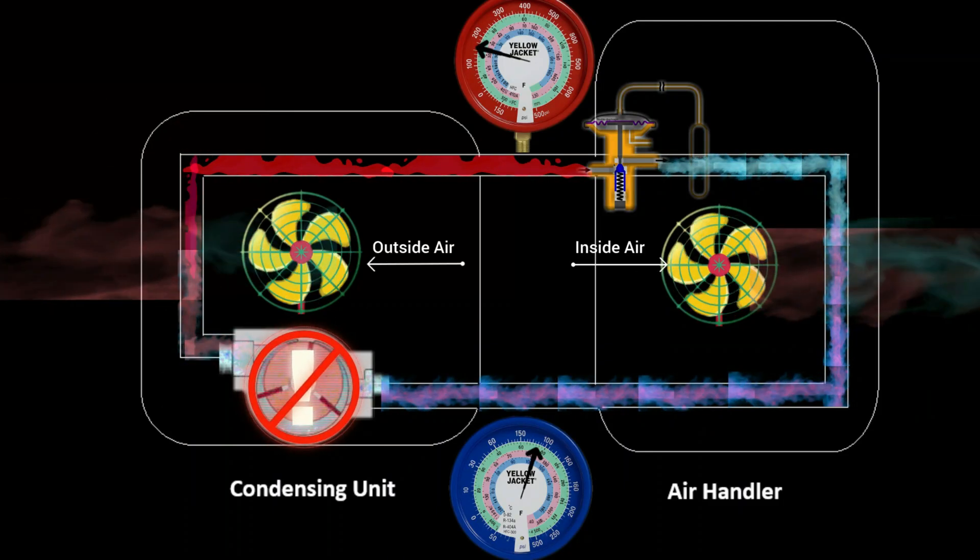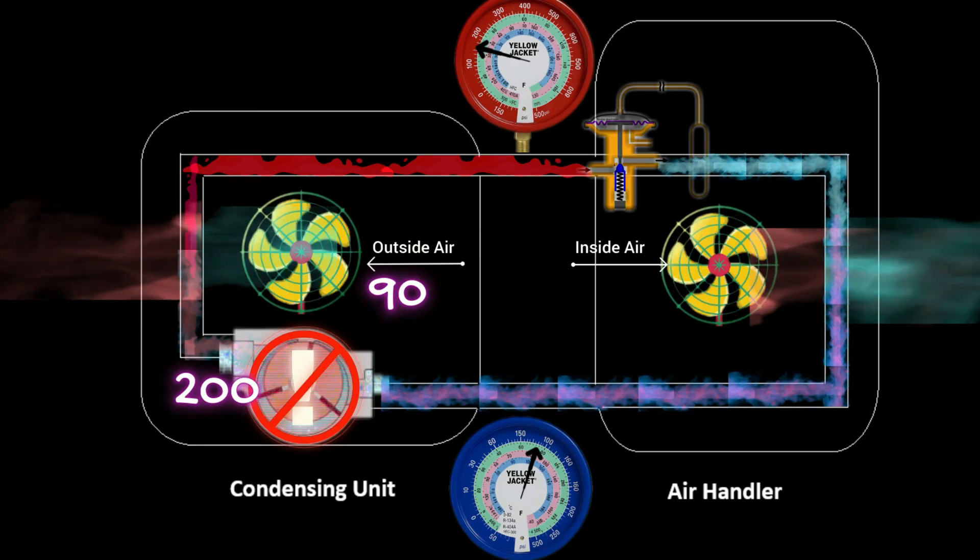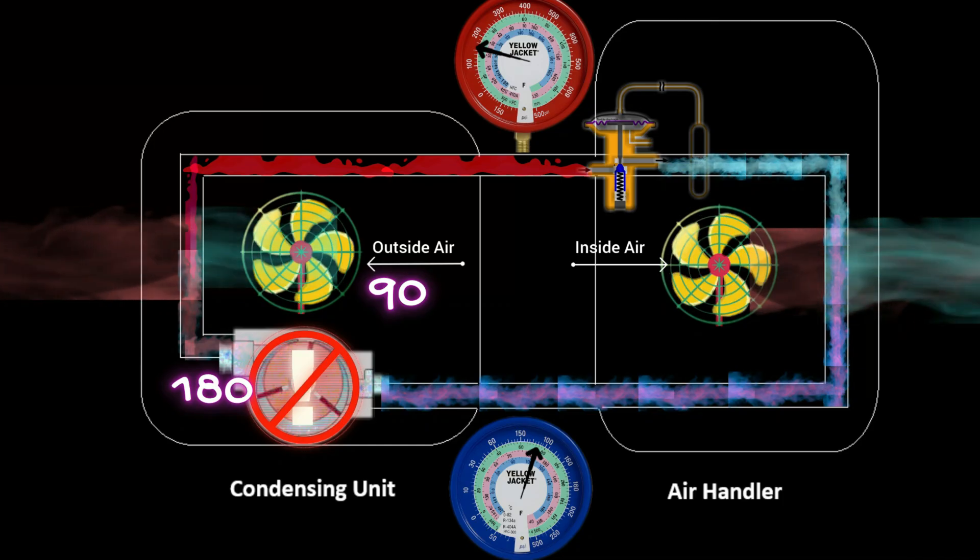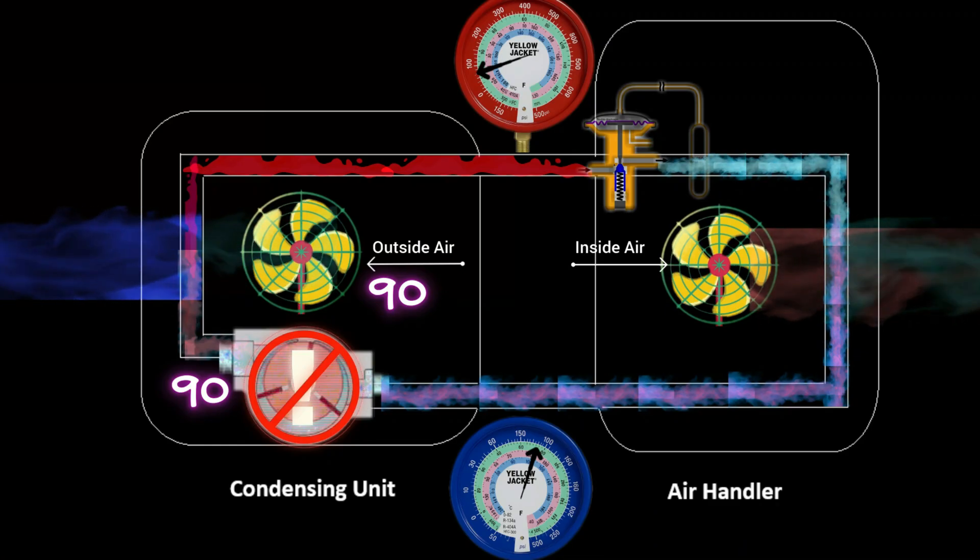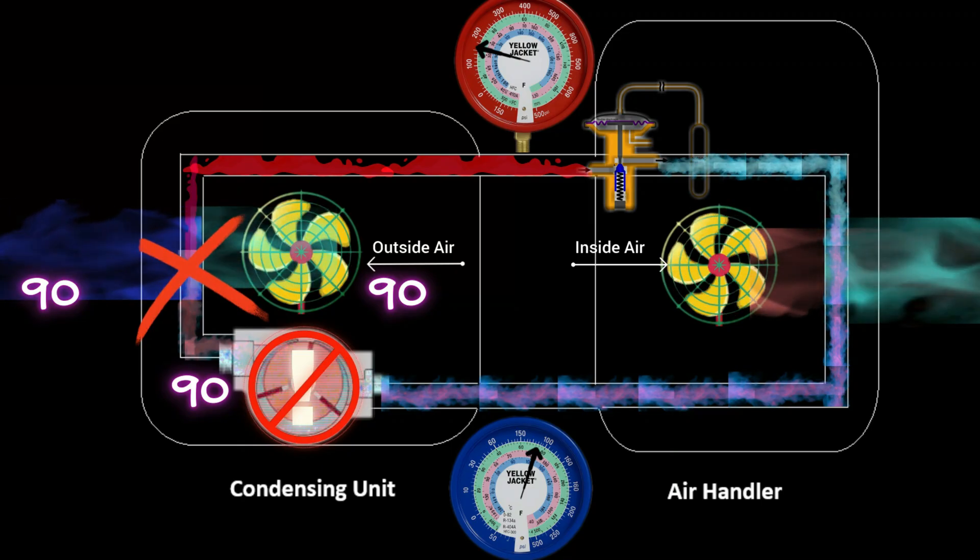When a compressor fails, that refrigerant is no longer being compressed into that hot gas. And so that refrigerant just sits there. It's not doing anything. It's not flowing anymore. So as our condenser fan continues blowing that 90 degree air over that refrigerant, that refrigerant is going to continue cooling down and cooling down until it's eventually ambient temperature, the same temperature as the outside air. And that heat exchange no longer occurs. And so we no longer have heat ejection out of the top of the condensing unit.